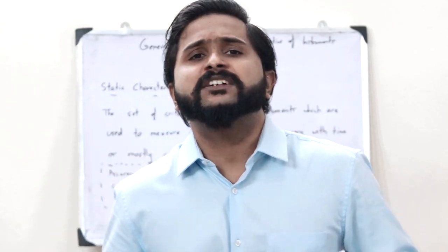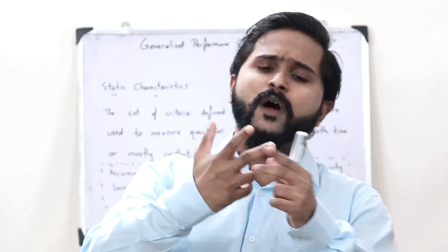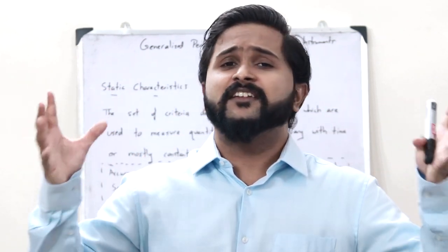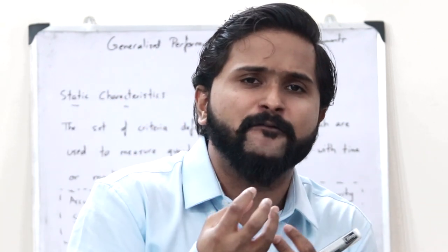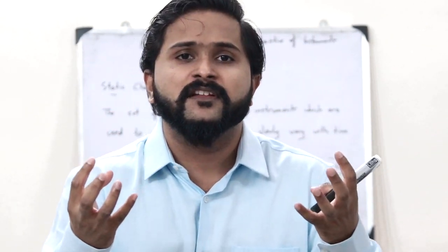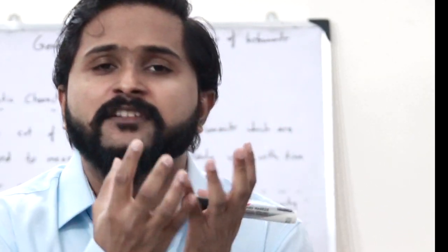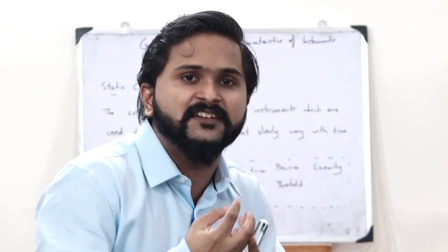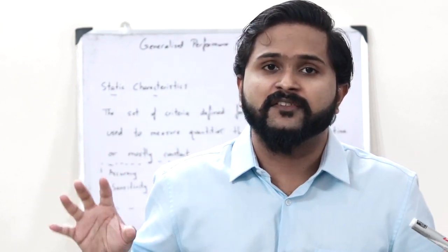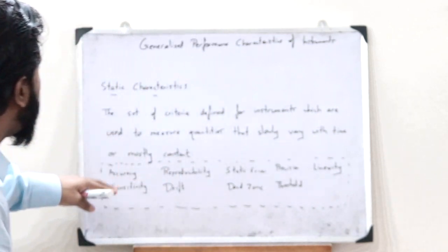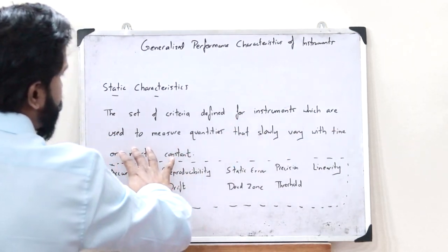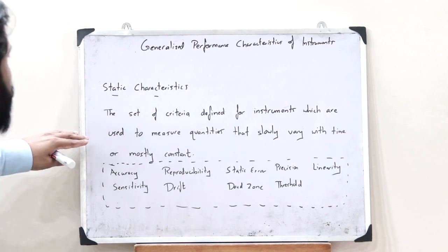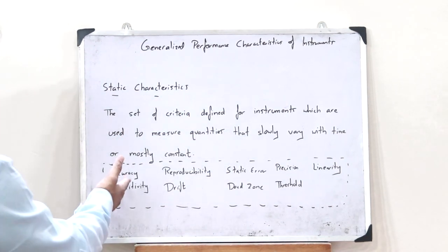A particular measurement instrument has two characteristics: static characteristics and dynamic characteristics. Static characteristics are a set of criteria defined for instruments used for the purpose of measuring quantities that slowly vary with time or are constant. The set of criteria defined for instruments which are used to measure quantities that slowly vary with time or are mostly constant are referred to as static characteristics.